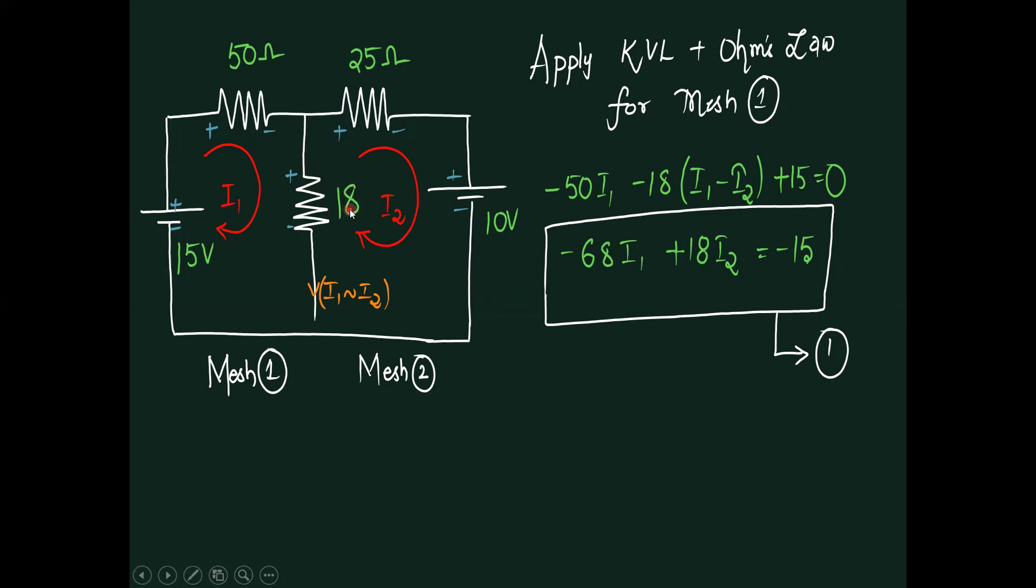Observe the things. In order to solve this, I would like to apply mesh analysis. This is one mesh and this is the second mesh. This mesh name is mesh number one, mesh number two, and the current carrying across this first mesh is I1 and this is I2. I would like to know those unknowns. Then the current traveling across 50 ohms is I1. Current flowing across 18 ohms is the difference of these two currents. It is the branch existing in between two meshes. This one is 25 ohms, this is I2 current.